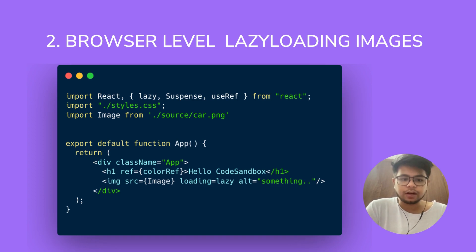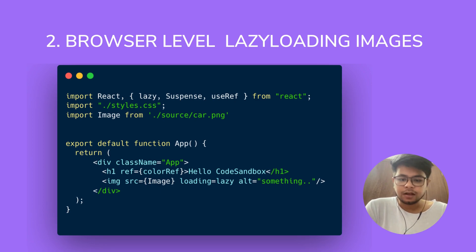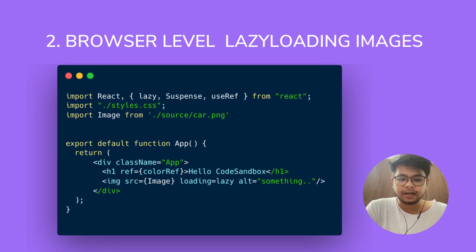Another small optimization at the browser level is lazy loading of images. We use lazy loading on images so that once you scroll down within a web page, it dynamically fetches images rather than loading everything at once. To implement browser-level lazy loading, within an image tag I've added a prop called loading='lazy'. Whenever an image enters the viewport as you scroll, it will automatically load. Images outside the viewport won't be loaded all at once.